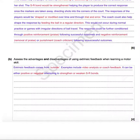Extrinsic feedback comes from outside. Examples include video analysis or coach feedback. It can be either positive or negative, and it's attempting to strengthen or weaken SR bonds. You can see straight away I've picked up three, maybe four marks in the first two or three sentences.